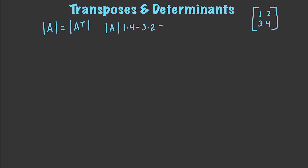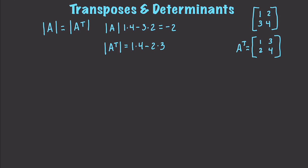And this, of course, is going to be equal to negative 2. And if I take the transpose — what is the transpose? Well, that's going to be 1, 2, 3, and 4 — so this is A transpose. How's that going to work out? So A transpose is equal to 1 times 4 minus 2 times 3, which is also equal to negative 2.